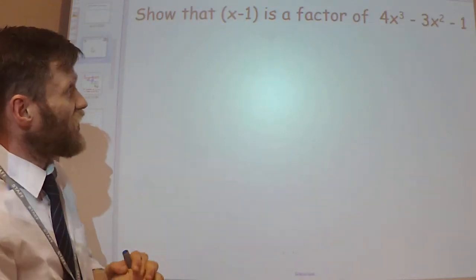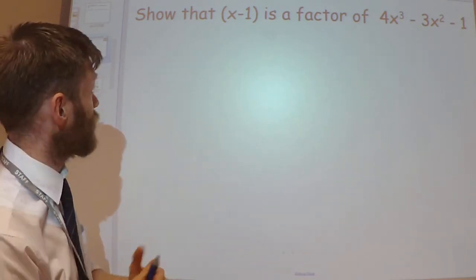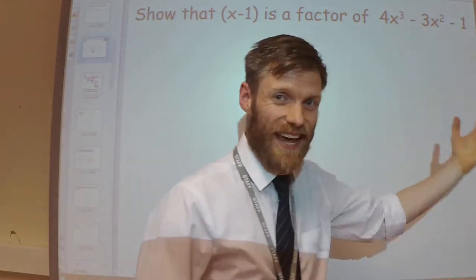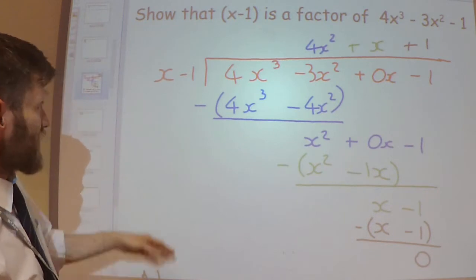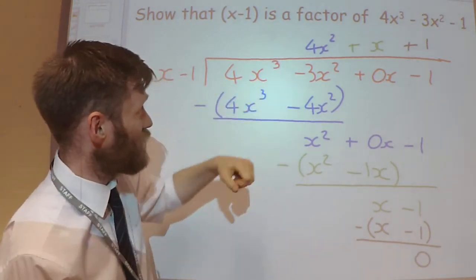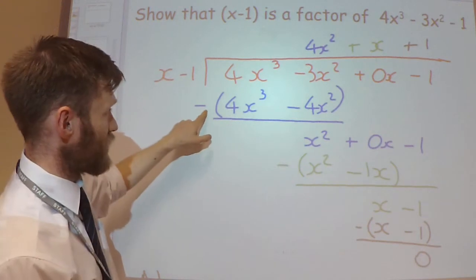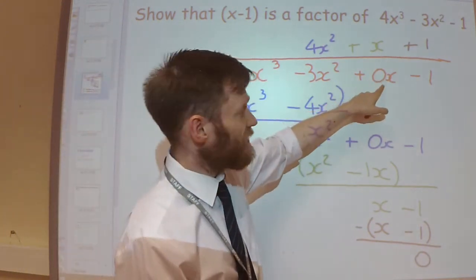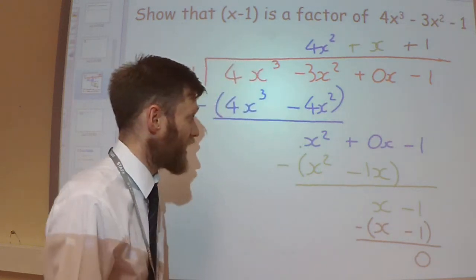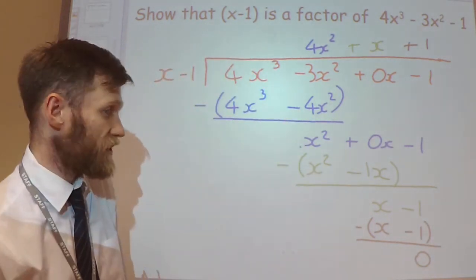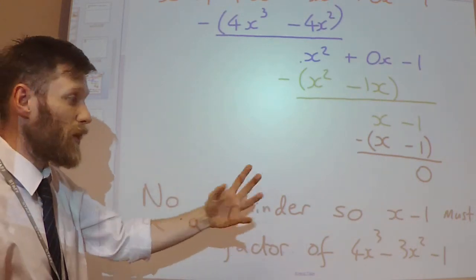If I wanted to show that x minus 1 is a factor of 4x cubed minus 3x squared minus 1 — basically that this goes into this exactly — one thing I could do is algebraic division, just like we did in the last video. x into 4x cubed gives 4x squared. Multiply out, then subtract. Notice I put a 0x there because there is no x term. I've gone through the algebraic division process and shown there's no remainder, so x minus 1 must be a factor.